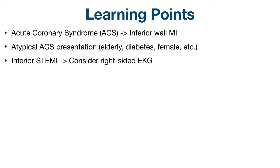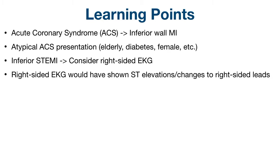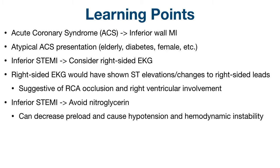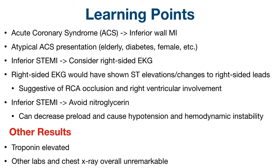Consider getting a right-sided EKG with inferior STEMIs. In this case, it would have shown ST elevations in the right-sided leads, suggesting right coronary artery occlusion and right ventricular involvement. Avoid giving nitroglycerin with inferior STEMIs, especially if right ventricular involvement is unknown or suspected — the vasodilation from nitroglycerin can decrease preload which the right ventricle relies on, and this can lead to hypotension and hemodynamic instability. The other results would have come back with a positive troponin, and the other labs and chest x-ray were overall unremarkable.